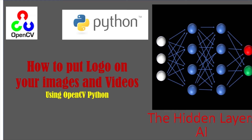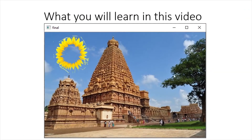Hello friends, this is Hidden Layers EA. We are going to talk about how to put logos on your images and videos using OpenCV. Imagine that you have an image and on top of it you would like to have a logo which looks transparent with a background, not changing anything on the background of the image. That's what we want to achieve in this video.